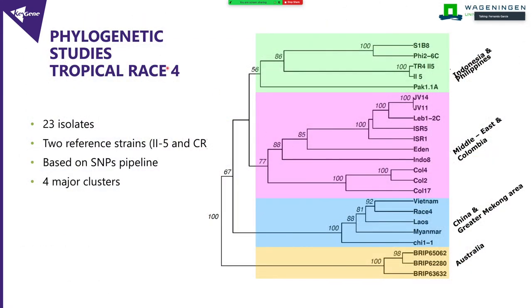We are still working on different analyses, trying to do the forensics for the Colombian samples, but for now the data is not really conclusive. The Colombian isolates are here in the second clade together with the ones from the UK and Jordan, Lebanon. But it's not really conclusive — the relationship is not as close as in other cases.